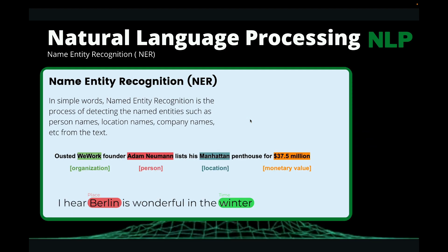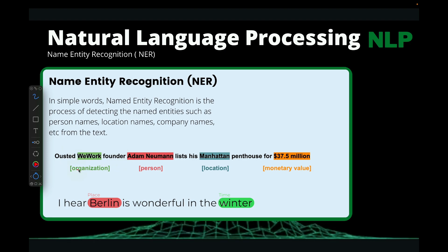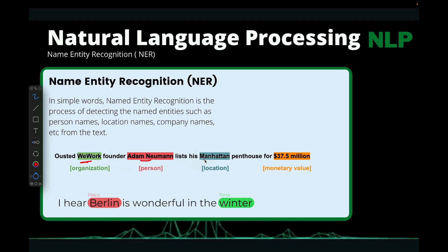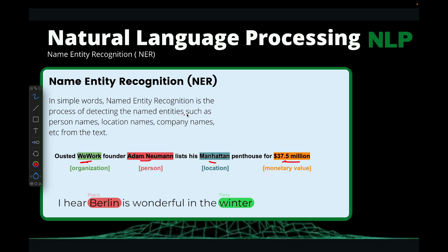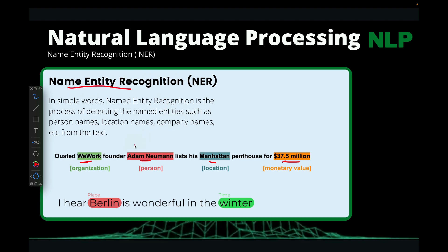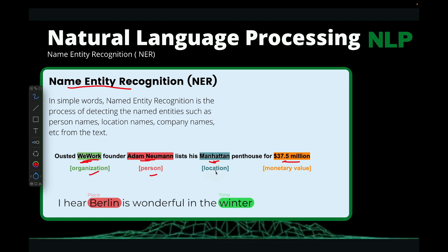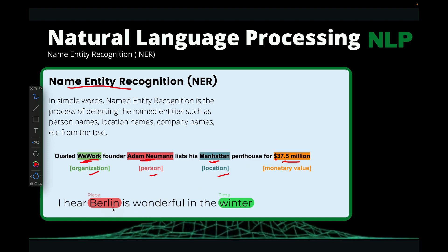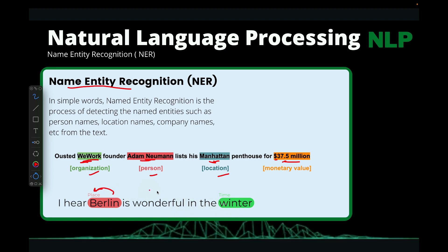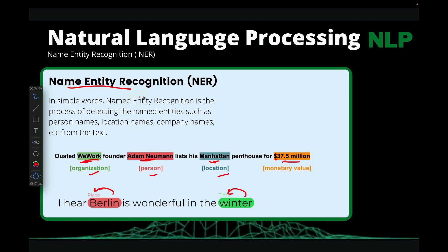Here is an example for you. We have this sentence: WeWork founder Adam Newman listed his Manhattan penthouse for $37.5 million. If you use Named Entity Recognition on this, it's going to recognize WeWork as an organization, Adam Newman as a person, Manhattan as a location, and 37.5 million as a monetary value. For instance, 'I hear Berlin is wonderful in the winter' — Berlin is a place, and winter is a time, a particular period in time.